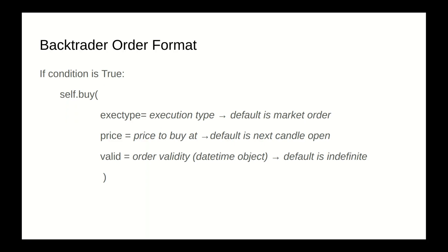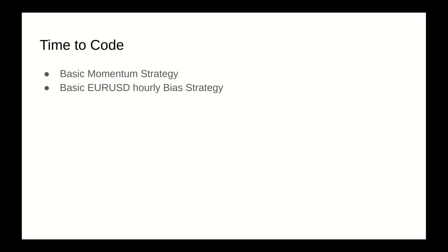According to the Backtrader order format, for example if we have a condition that is true — say the fast SMA is above the slow SMA — we need to issue an order using self.buy. We can include the execution type; by default it's a market order so we can omit it. The price to buy at, if using a limit order; by default it can be the next candle open, so we can omit it. The validity — a datetime object — by default it's indefinite, so we can omit that too. You can simply say self.buy — that's it. Time to code.